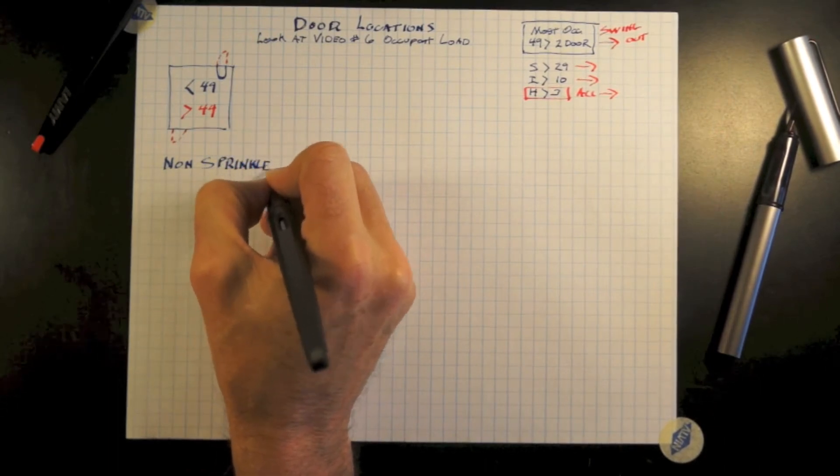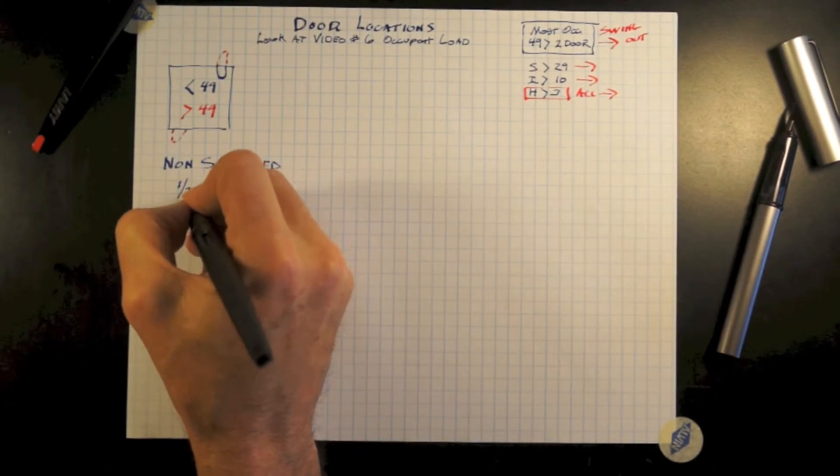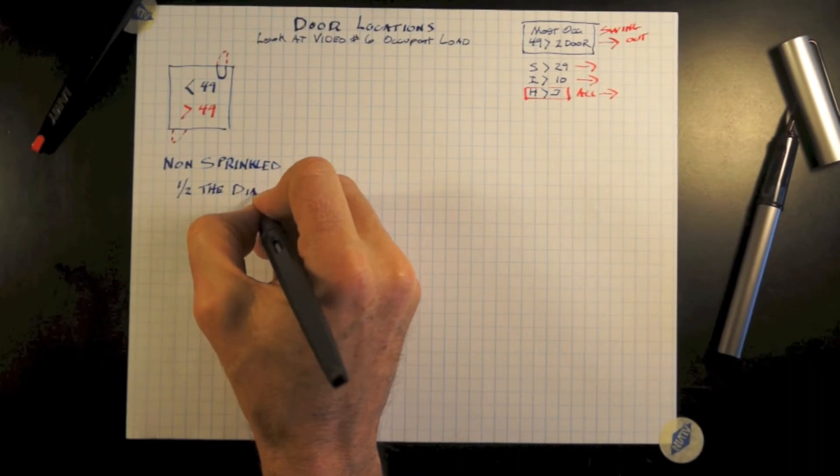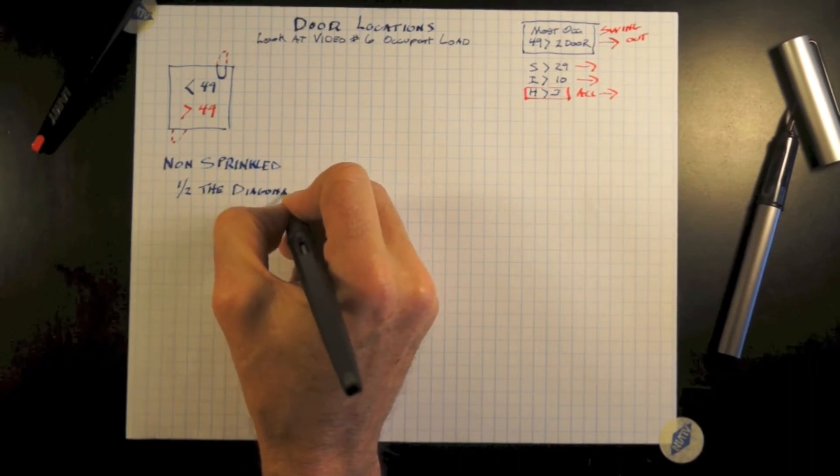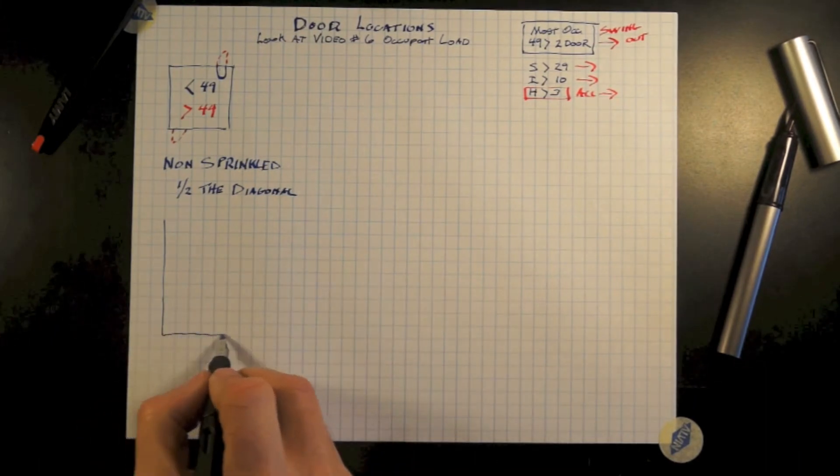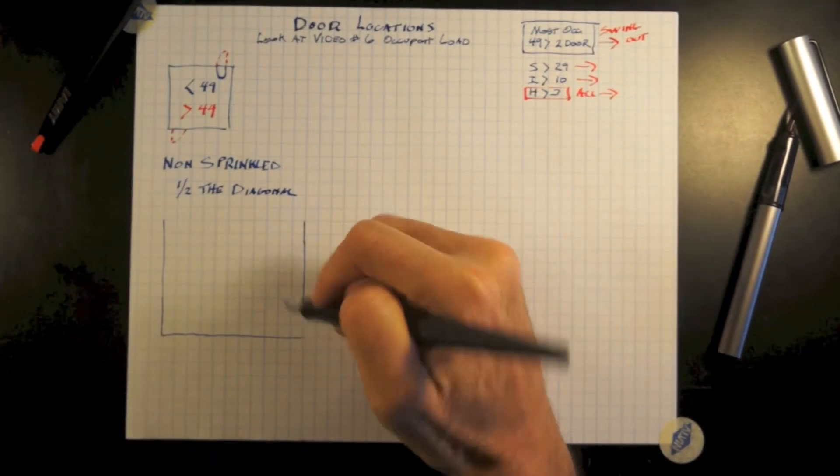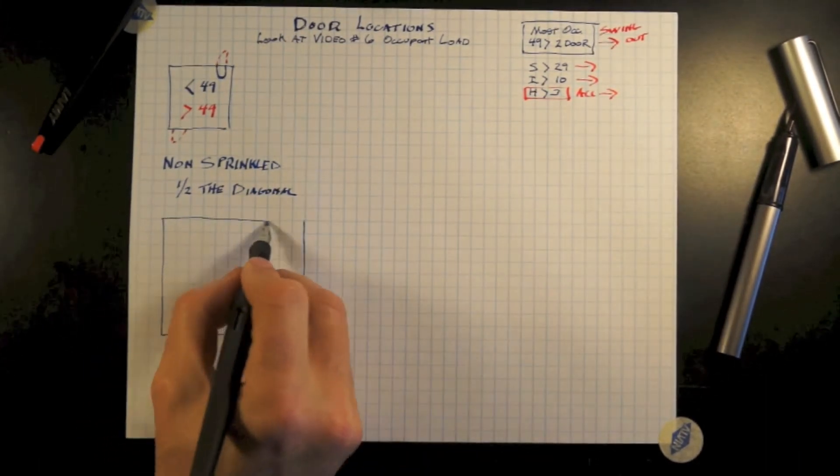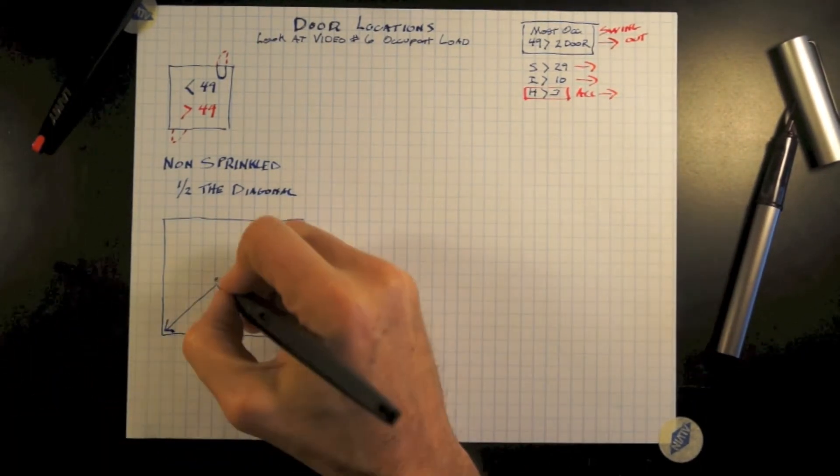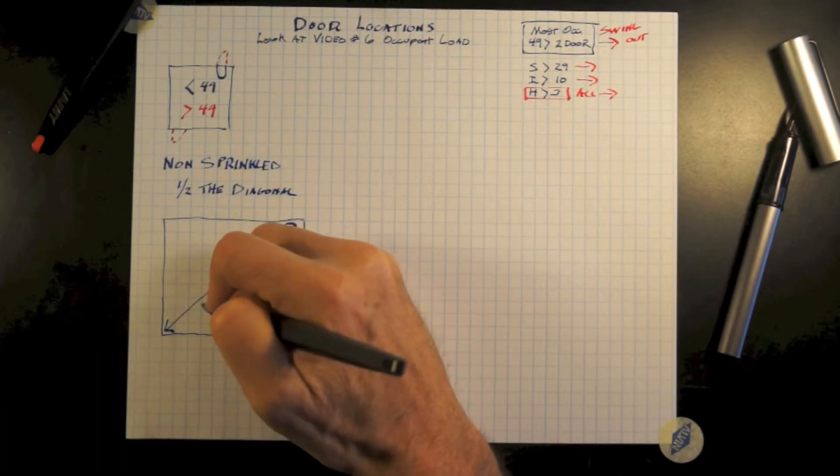Let's start off with non-sprinkled buildings and or non-sprinkled locations. Once we trip needing two doors, those doors shall be located not less than one half the diagonal distance apart or one half the overall longest length of the room apart.